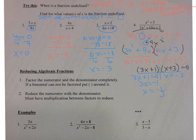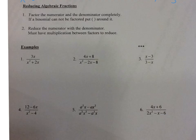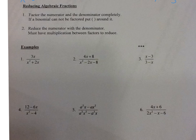Now we're going to move on to reducing algebraic fractions. The first thing you're going to do is factor the numerator and the denominator completely — that means factor until you can't factor anymore. If you have a binomial that can't be factored, put parentheses around it. When you reduce, you reduce the numerator with the denominator. Remember, you can only reduce factors, so there has to be multiplication in between the factors in order to reduce.